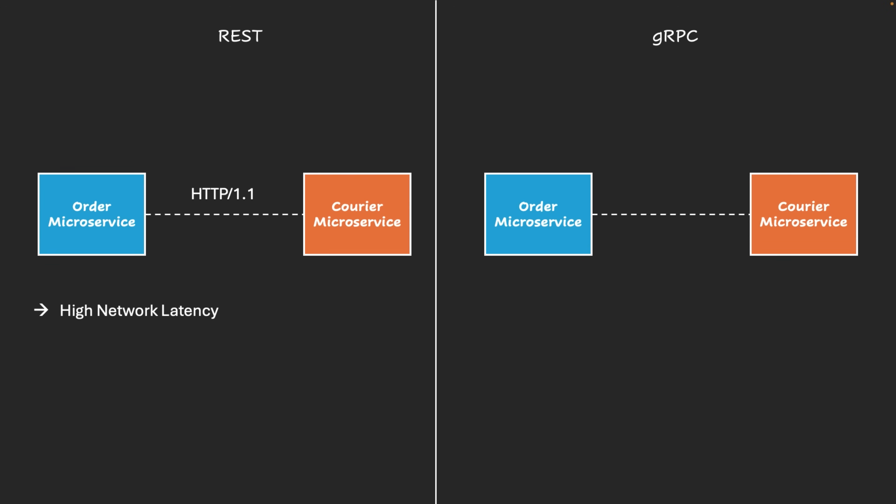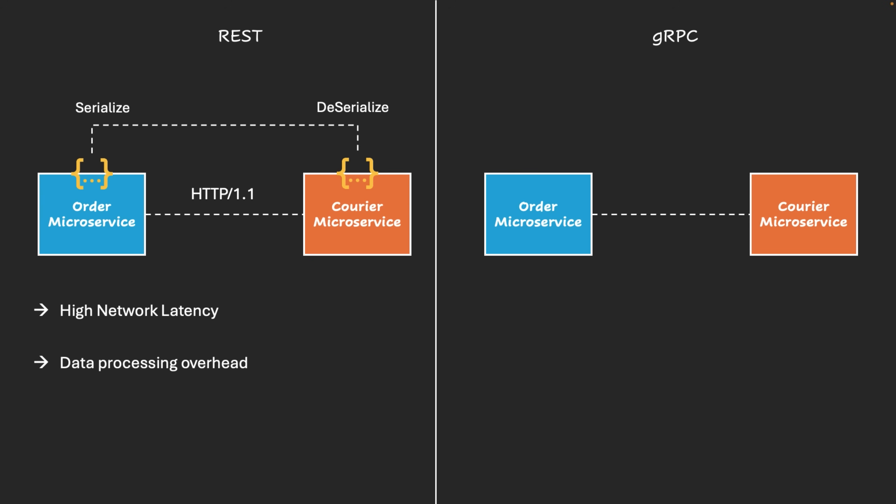The next problem in REST is data processing overhead. In REST APIs, client and server communicate with text-based JSON, which is human readable but heavy and bulky in nature. Every request and response must go through serialization — using the Jackson library to convert objects to JSON — and then deserialization on the receiver side to convert JSON back to objects. In high-throughput applications, this process consumes more CPU and memory, making it slower when handling large or frequent data exchanges. This is one of the major performance bottlenecks in REST APIs.